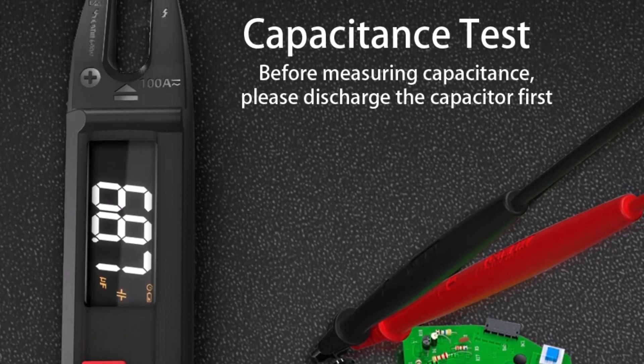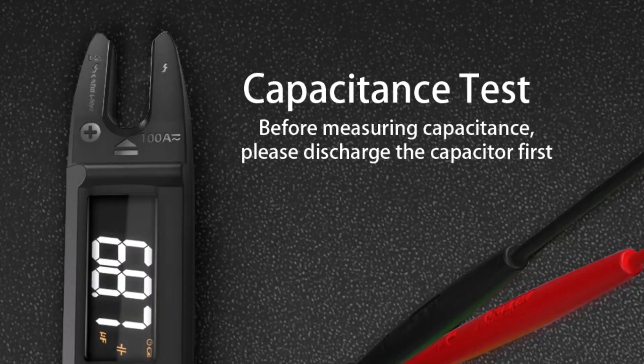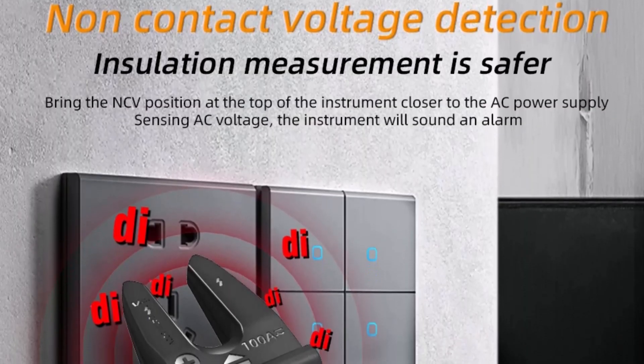While true RMS capability combined with auto and manual range options enhances measurement reliability, powered by a built-in rechargeable battery with USB charging, it eliminates the hassle of constantly replacing batteries.